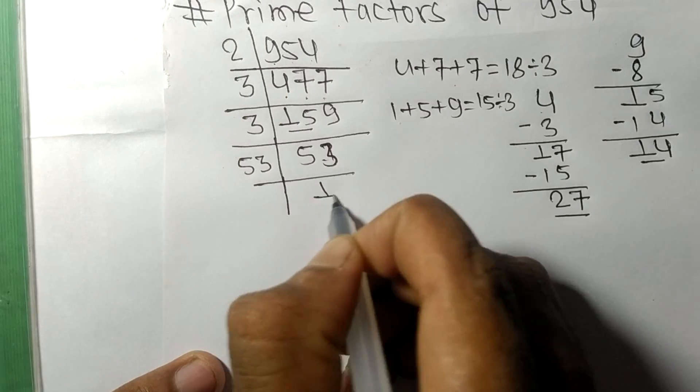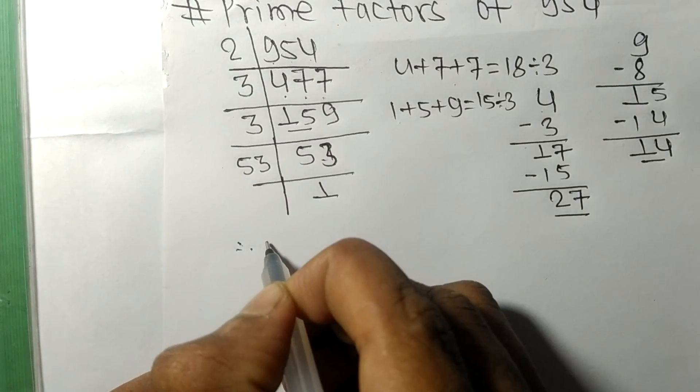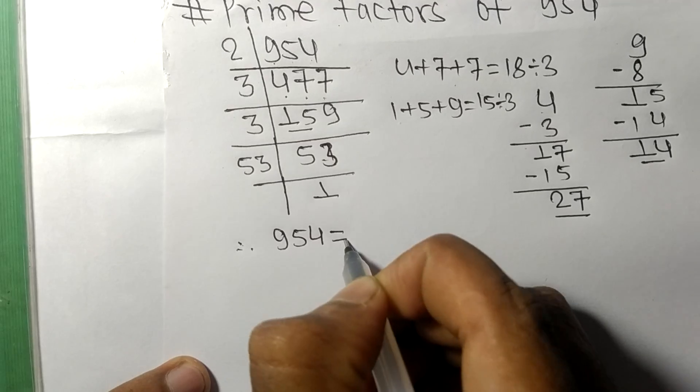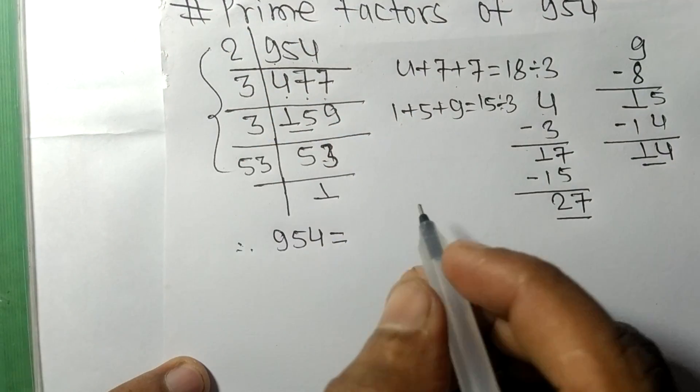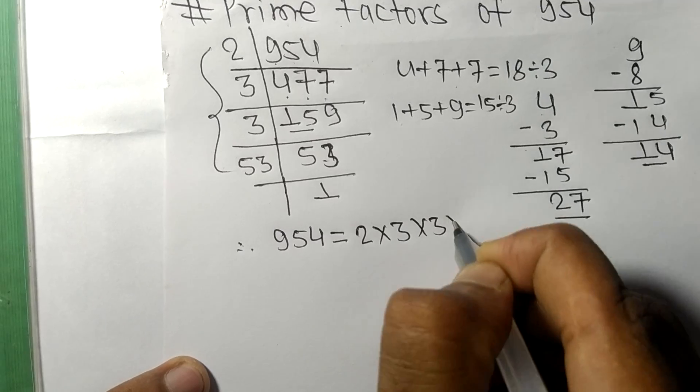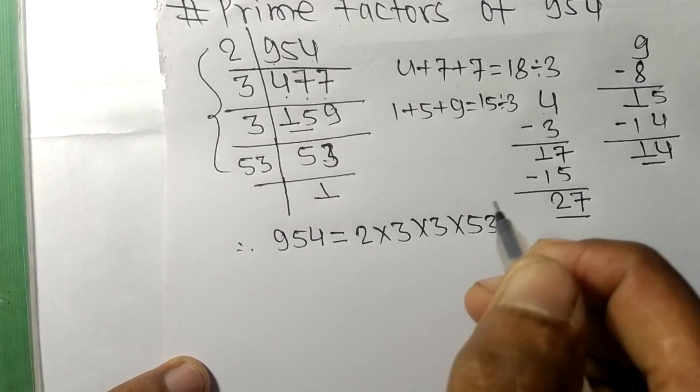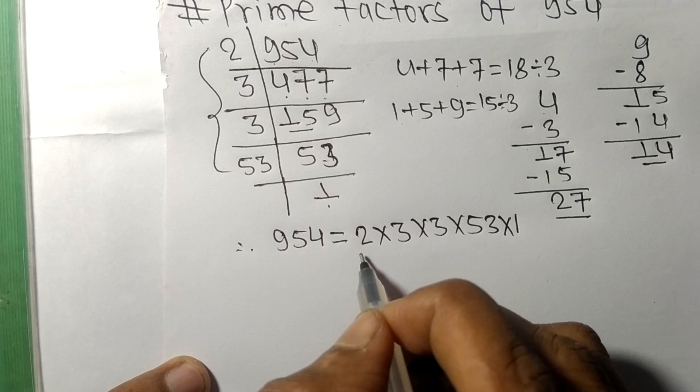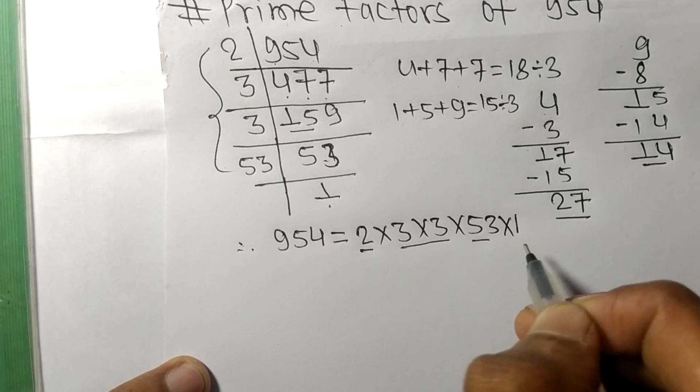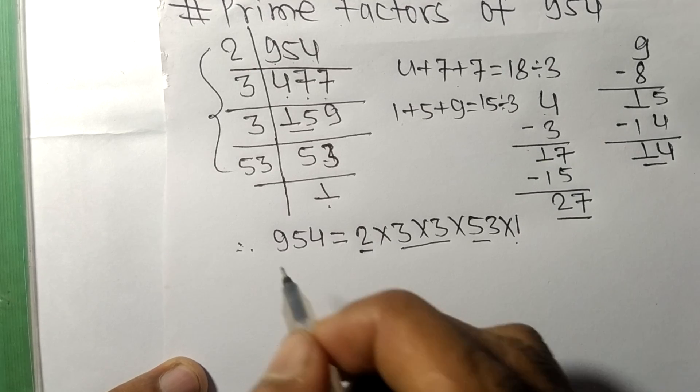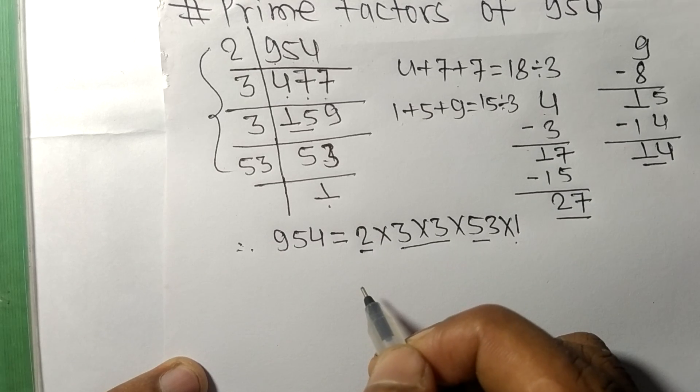Therefore 954 is equal to, from this side, it is 2 times 3 times 3 times 53. From here it is 1, so this is 2, 3 times 53, and 1 are the prime factors of 954.